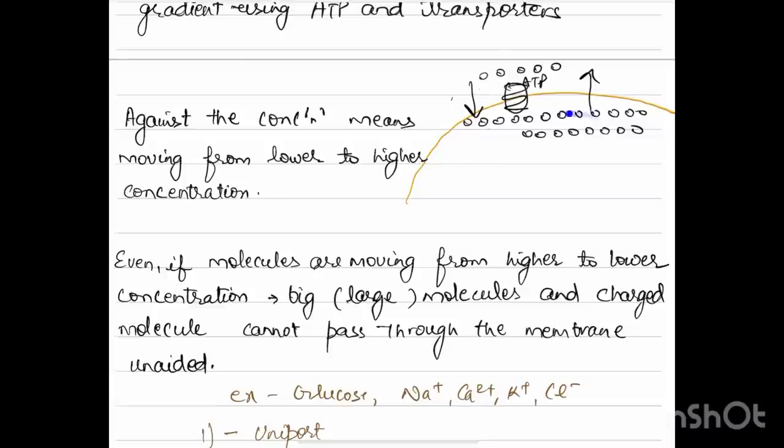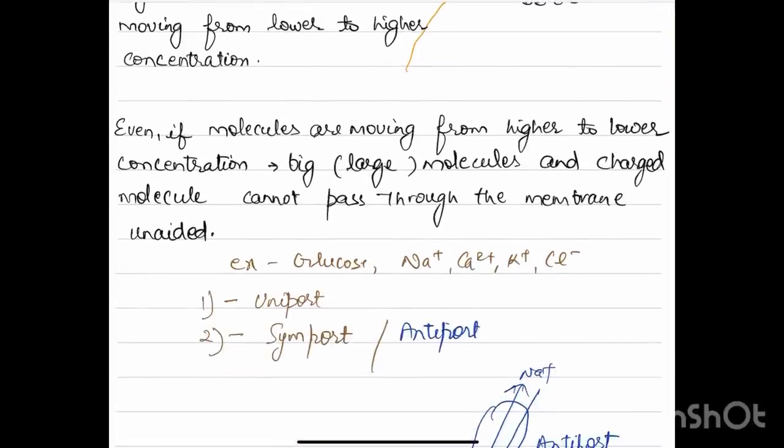Even if molecules are moving from higher to lower concentration, big large molecules and charged molecules cannot pass through the membrane unaided. This is the property of the plasma membrane that it won't allow transport of large molecules and charged molecules across the plasma membrane.